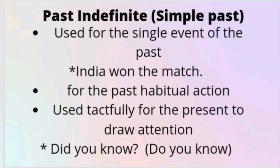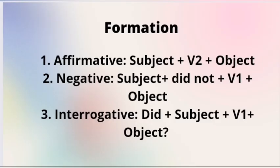For the formation of simple past: if your sentence is affirmative, it begins with the subject, second form of the verb, and object. In case the sentence is negative: subject, did not, first form of the verb, object — note that with 'did' you always use the first form of the verb. In case the sentence is interrogative, it begins with did, subject, first form of the verb, object.